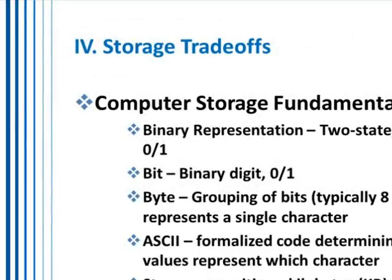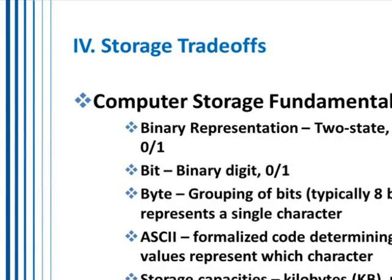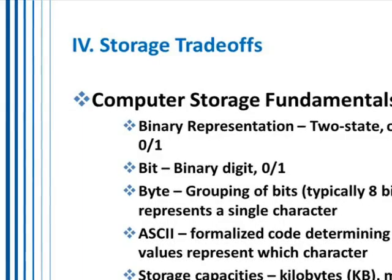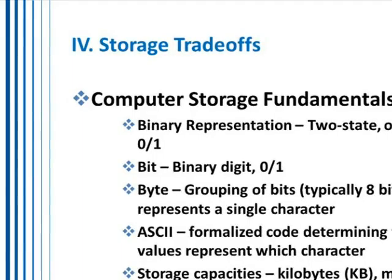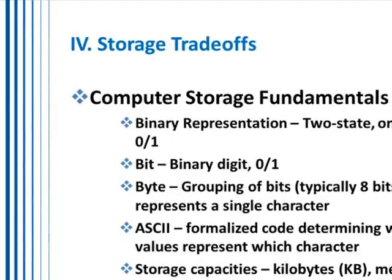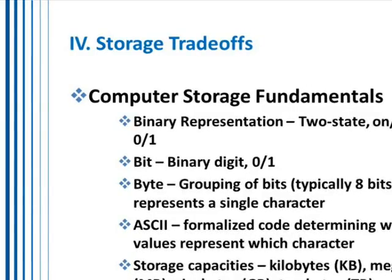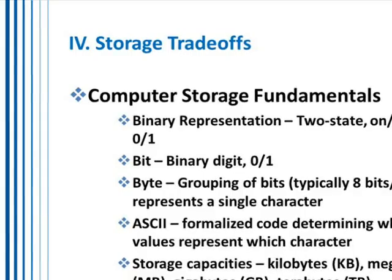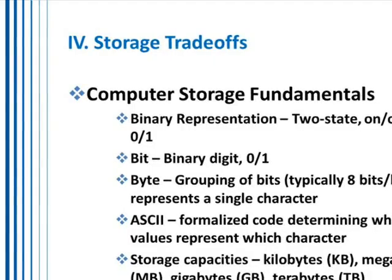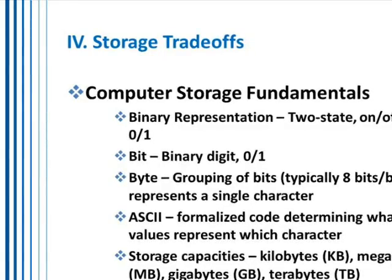All computers operate under a basic premise called binary code. Binary representation identifies two states — the presence of electrical current or no presence of electrical current. No electrical current is a zero; electrical current is a one. That's all a transistor does — it only switches between current or no current. That lowest level of a binary digit is called a bit; it's either a zero or a one.